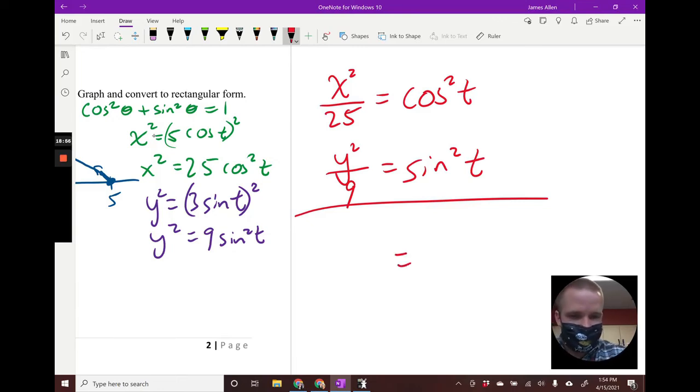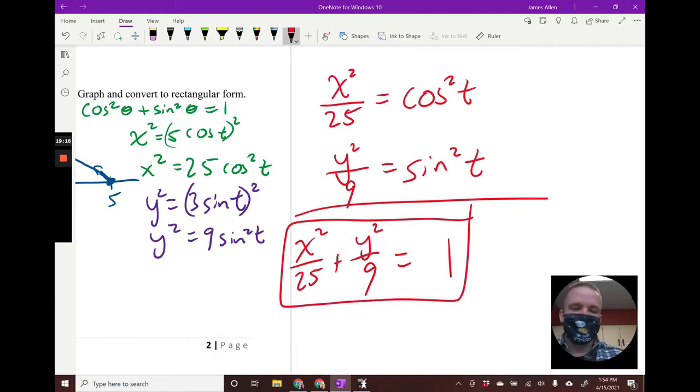Holy guacamole! This right here is the equation of an ellipse centered at (0,0), with a major axis of five and a minor axis of three. Well hot diggity dang, we certainly had something representing that in blue there.